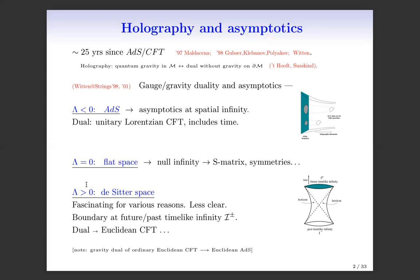For zero cosmological constant we have flat space with null infinity. For positive cosmological constant we have de Sitter space, which is fascinating but less clear. One might think the natural boundary here is future or past time-like infinity. I will talk about this in the last part of the talk.